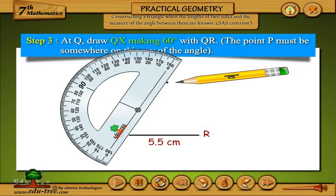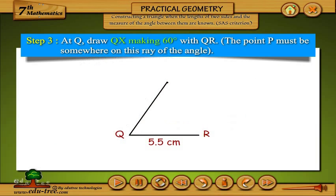Step 3: At Q, draw QX making 60 degrees with QR. The point P must be somewhere on this ray of the angle.